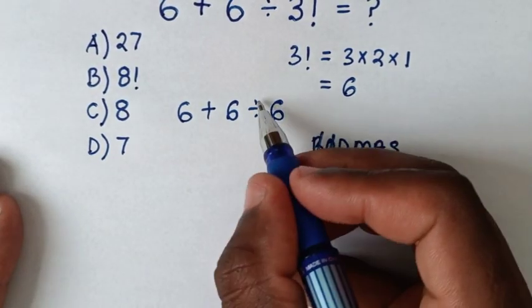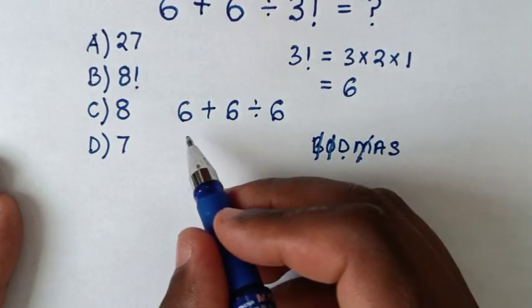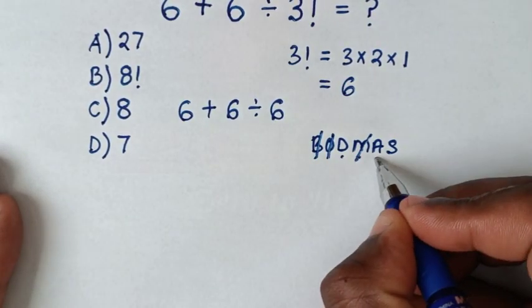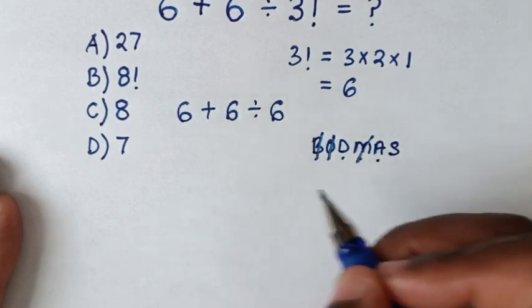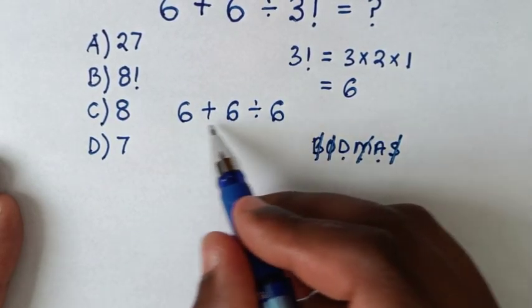D is division we have this division here. M multiplication we don't have multiplication into this problem. A addition we have this addition here. S subtraction we don't have subtraction into this problem.